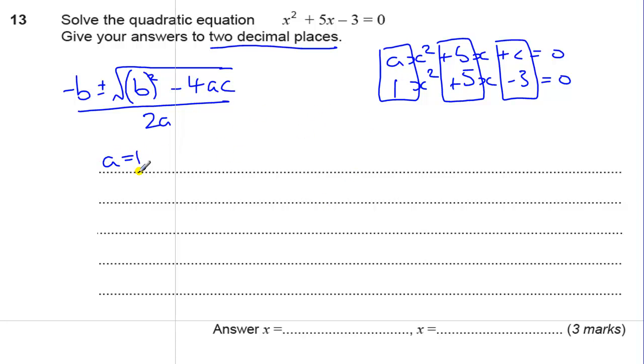So, we have a equals 1, b equals 5. It's quite nice to have b as a positive number. If it's negative, it makes things more complicated because it's minus minus. And c equals minus 3.